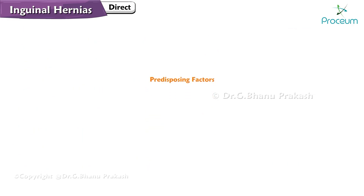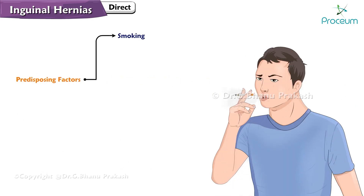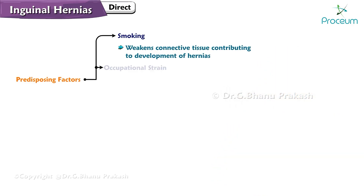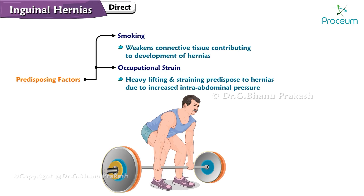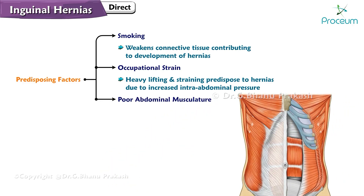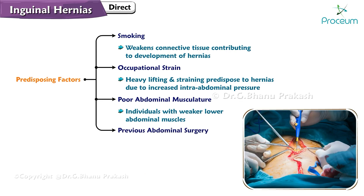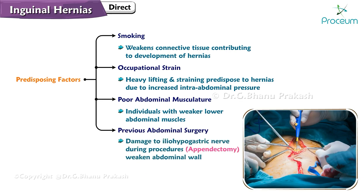Predisposing factors that increase the risk of developing a direct inguinal hernia include: smoking, which weakens connective tissue; occupational strain from jobs involving heavy lifting, due to increased intra-abdominal pressure; poor abdominal musculature in individuals with weaker lower abdominal muscles; and previous abdominal surgery, where damage to the iliohypogastric nerve during procedures such as appendectomy can weaken the abdominal wall, increasing hernia risk.